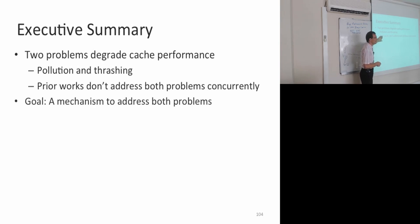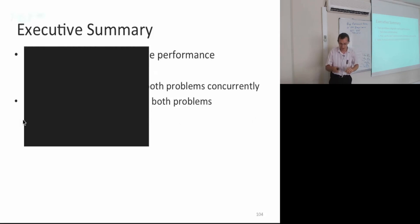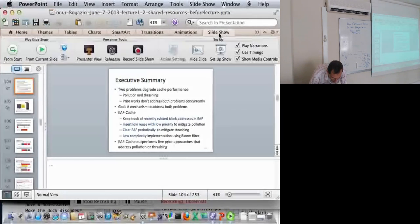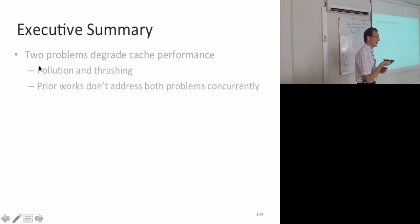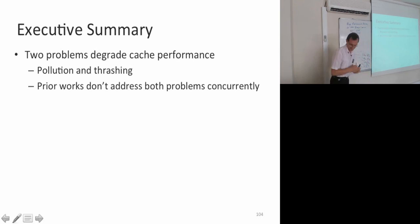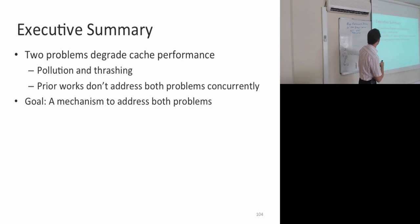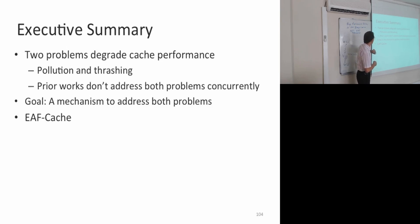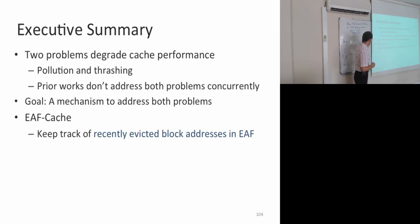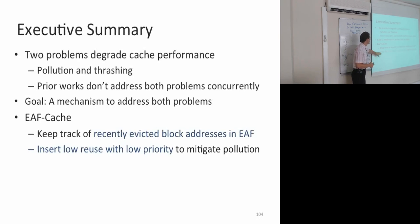Prior works don't address both problems concurrently. The goal is to have a mechanism to address both pollution and thrashing. The solution is the evicted address filter cache, which is applicable to any place where you employ caches, and it will have low overhead. The idea is to keep track of recently evicted block addresses in a separate filter, and insert low reuse blocks with low priority to mitigate cache pollution.